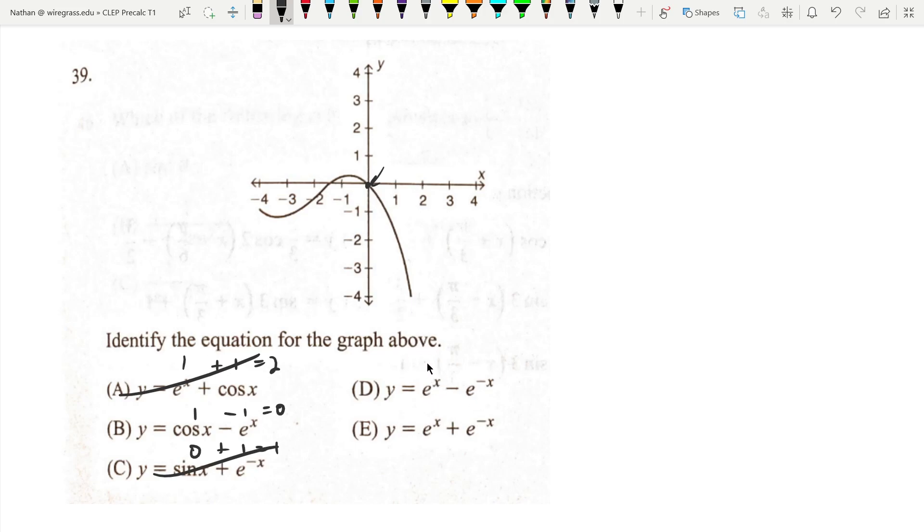e^0 is 1 minus e^0 is 1. That one works. And this one gives us 1 plus 1, which is 2, so that one cannot be it. The question is between B and D. Which one is it?